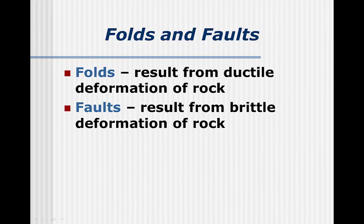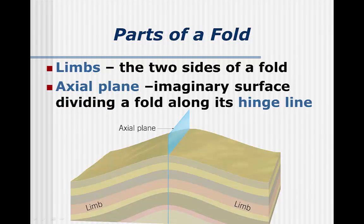Whether a rock is folded or faulted depends on the type of plastic deformation it undergoes. If the rock is bent, a fold is formed. If the rock snaps, there's a fault created. Most folds will be the result of compressional stress. If you have a pile of loose paper in front of you, apply a compressional stress from the edges and the paper will bend up or bend down. In either case, you've created a fold, reducing the area the paper covers, the same way mountain building does.